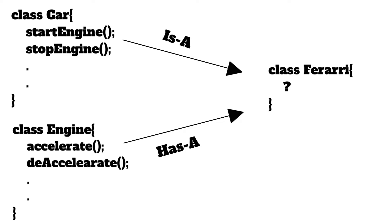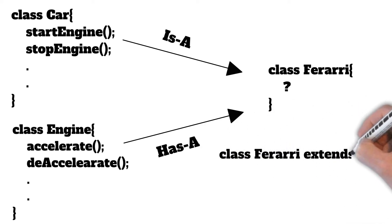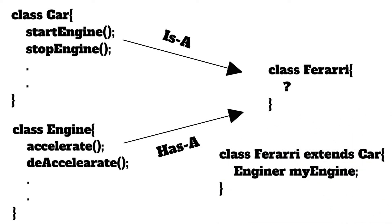So in this case, the relation between Engine and Ferrari is 'has-a', which is aggregation. So our Ferrari class will be modified as follows: it will extend the Car class using inheritance and it will have an Engine class using aggregation.